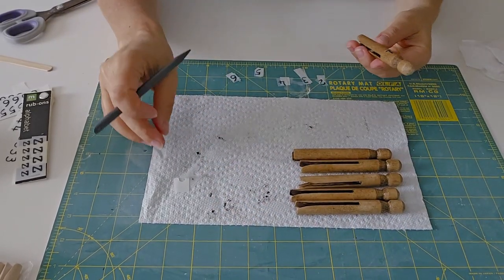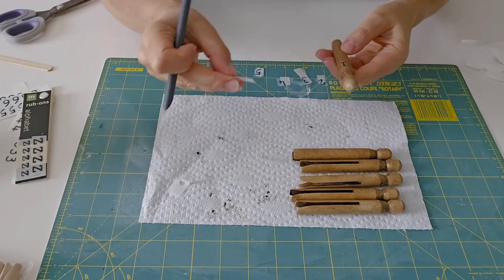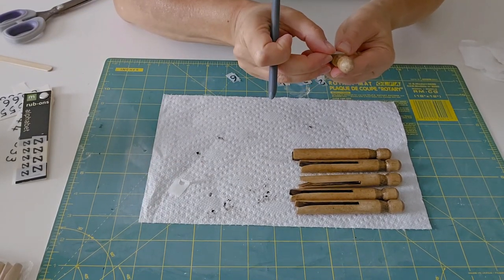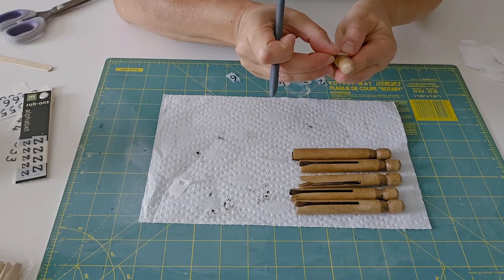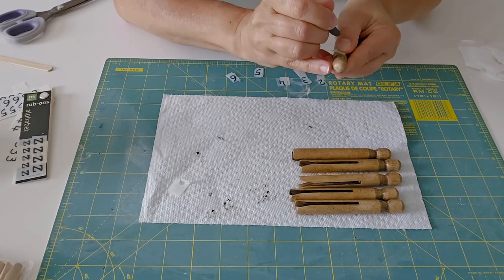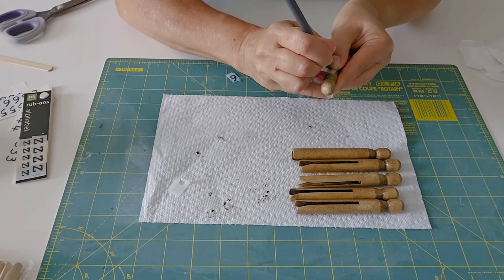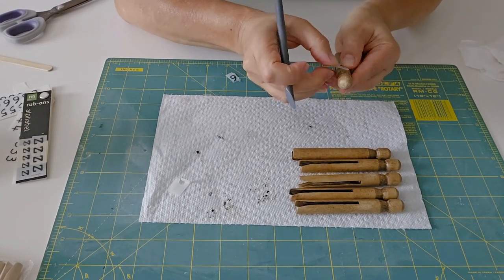I think I lost the tip of my one. Oh there it is. I'm gonna just add that back somehow. It was left on the paper, but that's what's so cool about these rub-ons is they're easy to manipulate.